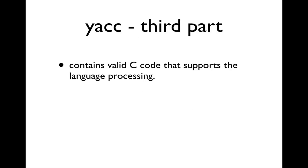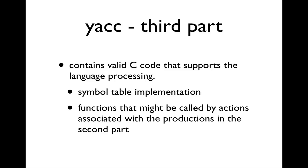The third part of the YACC input file contains valid C code that supports language processing. Often we'll find a symbol table implementation here — a data structure to keep track of identifiers encountered in the source code. I might also have implementations of functions called by actions in the second part, while the first part holds prototypes or declarations of those functions.